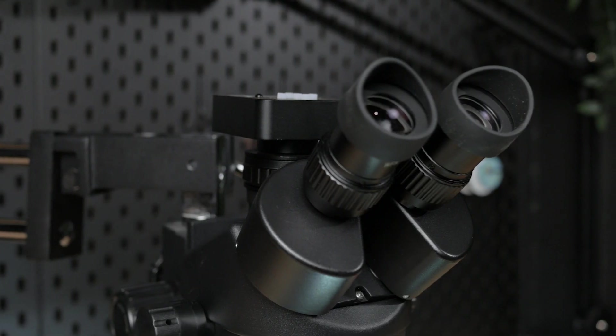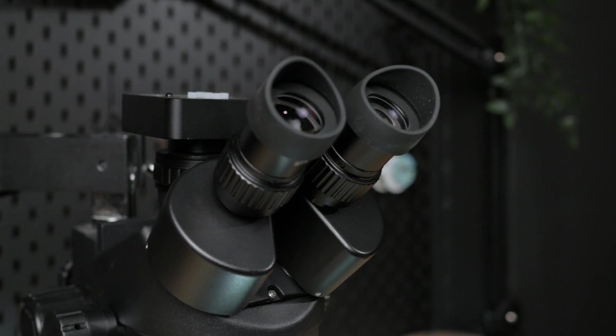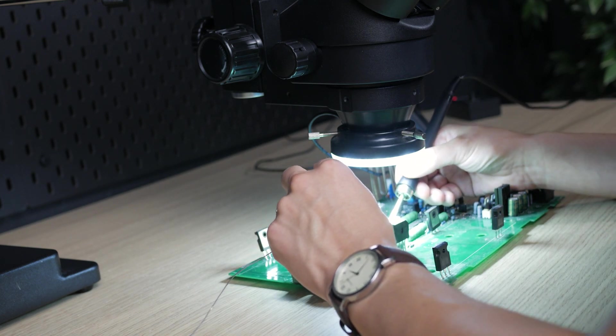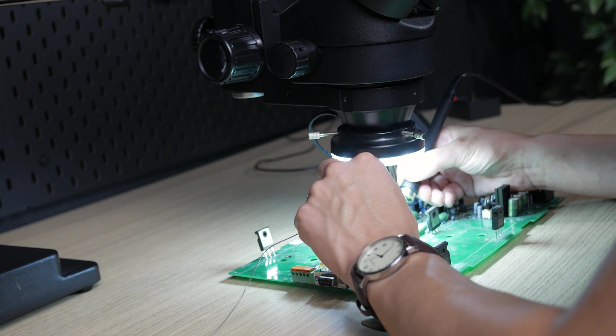A stereo microscope lets you see a three-dimensional image. There are two eyepieces each having its own optical path. This means that you are able to see depth which makes it significantly better for practical work such as component placement and soldering.